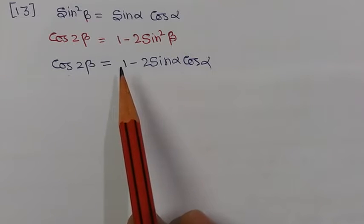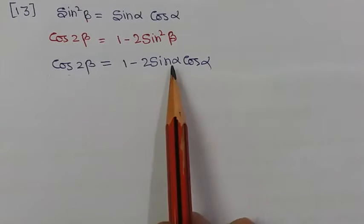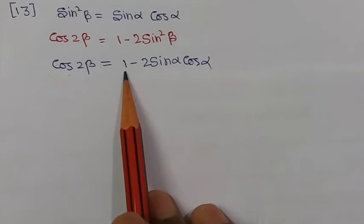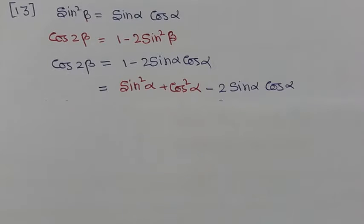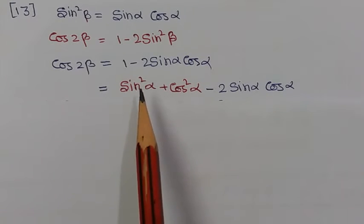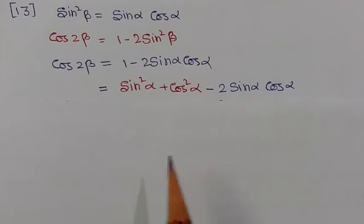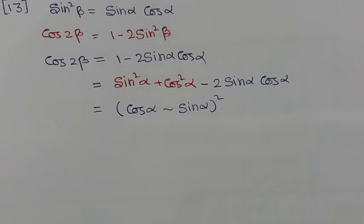We know that sin²θ + cos²θ equals 1, so sin²α + cos²α equals 1. We substitute this identity to write: cos 2β equals sin²α + cos²α minus 2 sin α cos α. This becomes a minus b whole square — a² + b² minus 2ab — giving us cos alpha minus sin alpha, whole square.